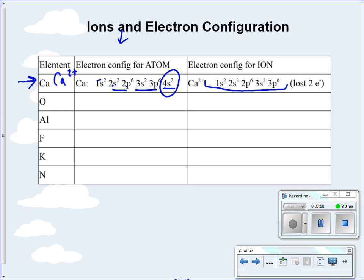That configuration stopping at 3p6 looks like argon, which is what calcium is trying to look like — the noble gas with a full valence electron shell. Its valence electrons are now on energy level 3, the outermost energy level, and it's 6 plus 2, which is 8. So it's happy.